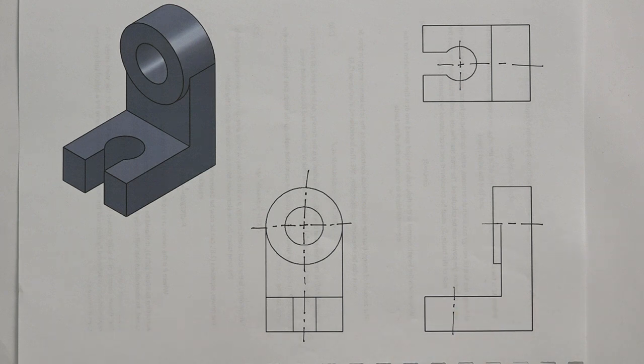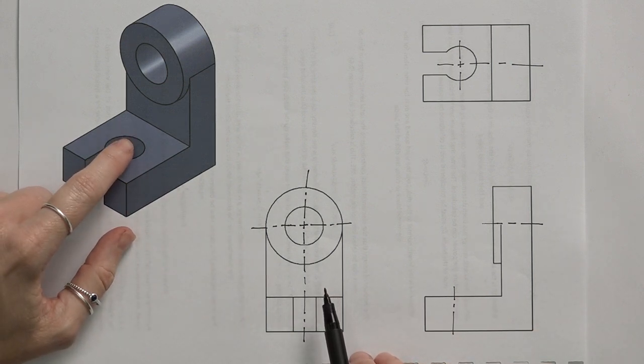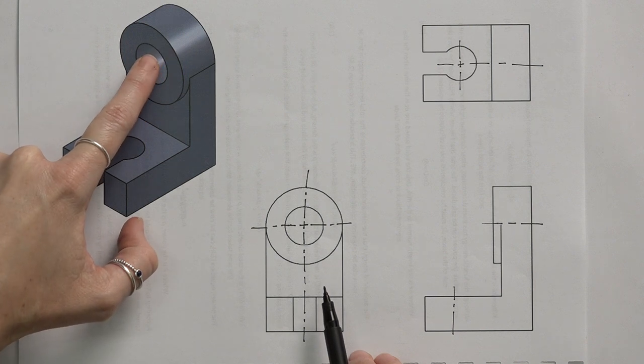Now hidden detail. Hidden detail is only shown on one of the views. So for every feature it's just shown once. So what can we show here? We want to show the slot and we want to show this hole here at the top.